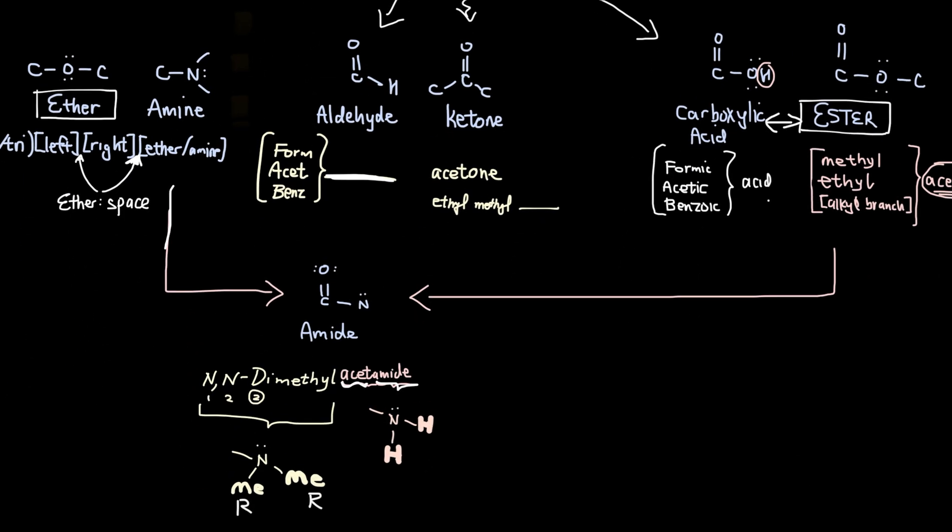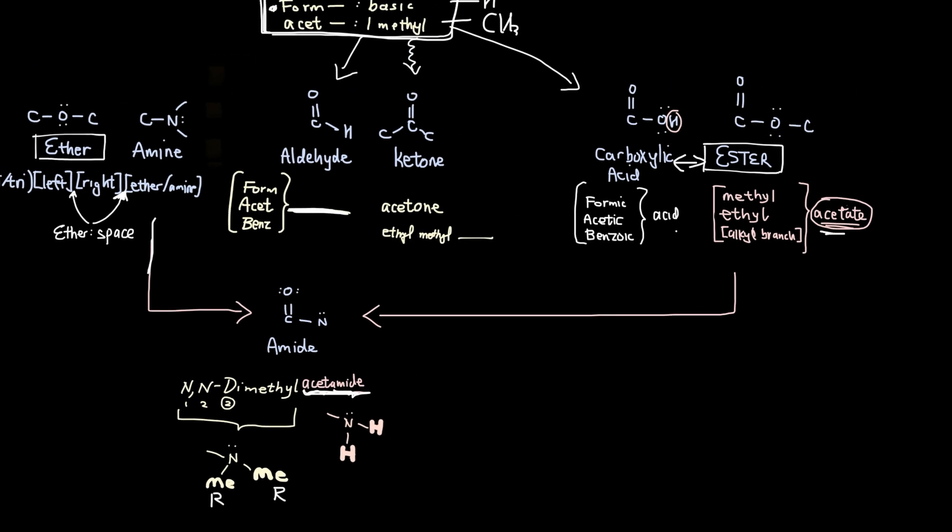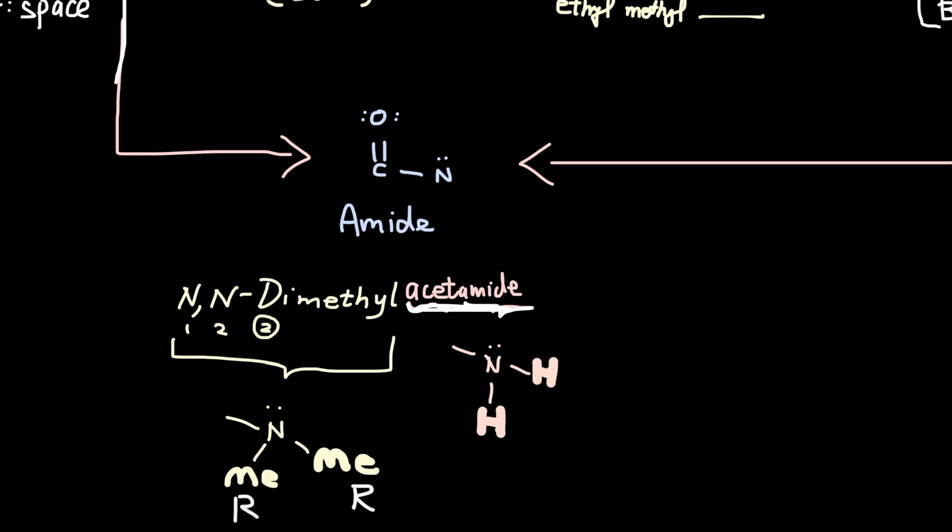When you combine an ester and an amine, you get an amide, which makes sense given the root word is acet, acet from the ester and amide, which sounds like the cousin of amine. The amide naming function has a root of acetamide, which is when the lone pair nitrogen is bonded to two H's. That's your standard name.